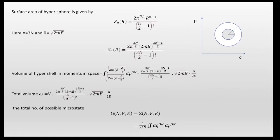The surface area of a hypersphere is given by S_N(R) = 2π^(N/2) · R^(N−1) / Γ(N/2). Here the mean radius is √(2mE) and we consider N = 3n. Therefore the surface area becomes 2π^(3n/2) · (2mE)^((3n−1)/2) / Γ(3n/2). The volume of the hypershell in momentum space equals 2π^(3n/2) · (2mE)^((3n−1)/2) / Γ(3n/2) times √(2mE) · (delta / 2E).